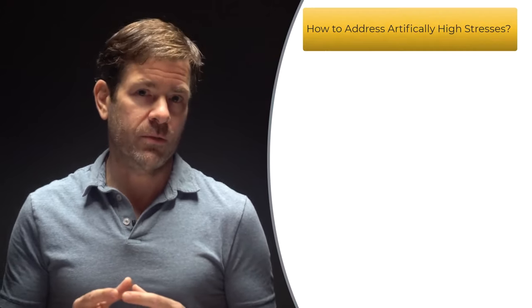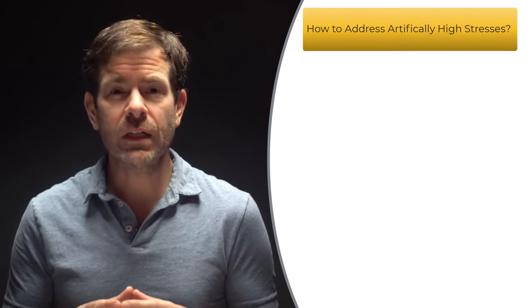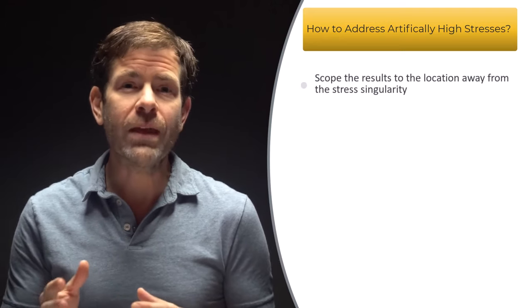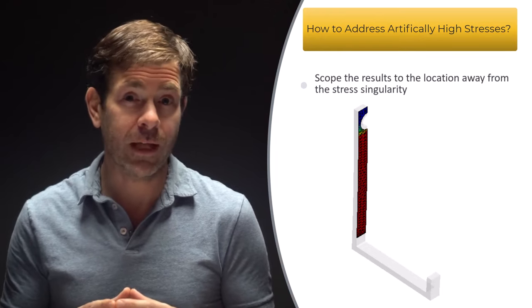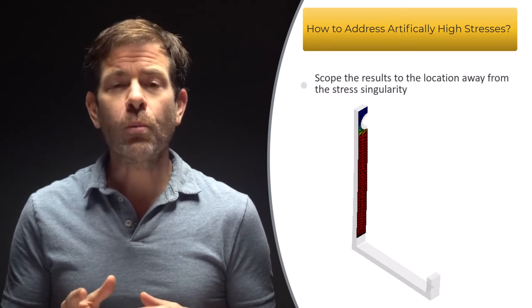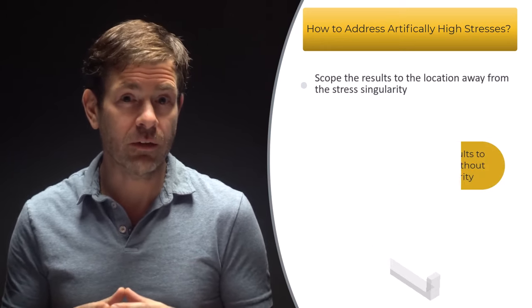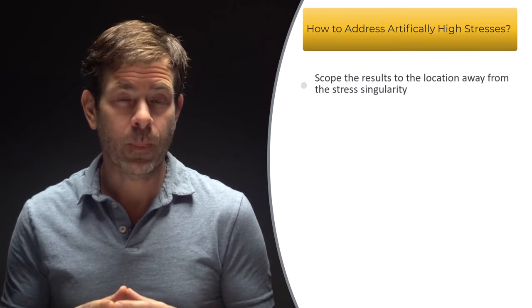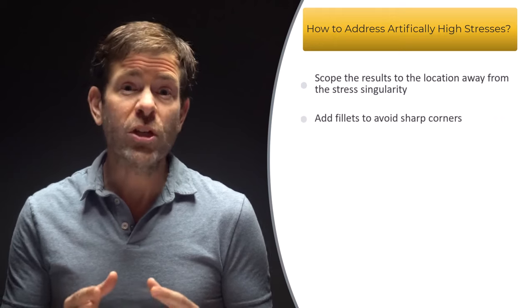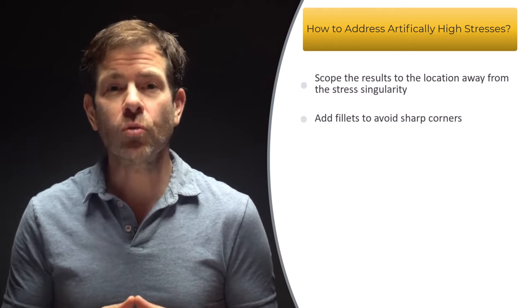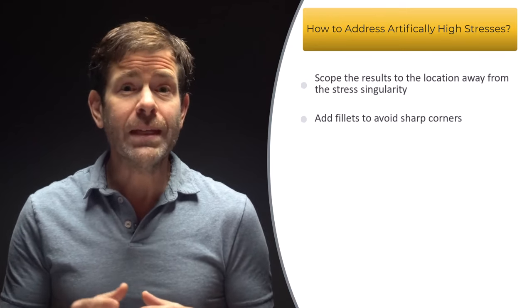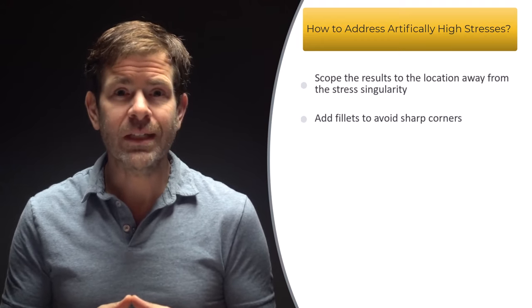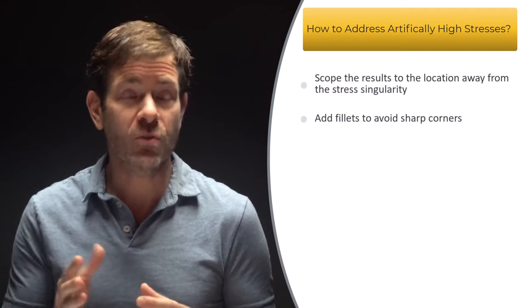So how do we address these singularities? From Saint-Venant's Principle, we know that the influence of the singularity is local, so the stresses away from the singularity are still valid, and the displacements and rotations are still valid. We can scope our results to not include the location of the stress singularity if it is not a region of interest. If we are interested in the region, we should add in the fillets so the mesh no longer has a sharp corner. In this case, the stress will no longer be singular. You may need small elements to resolve the curvature of the small fillets, but you'll find that the stress converges with mesh refinement.